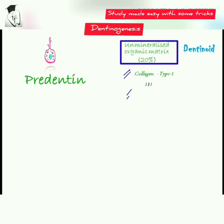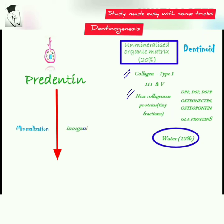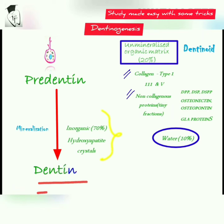Non-collagenous proteins are also present in a tiny fraction, consisting of dentine phosphoprotein, dentine sialoprotein, dentine sialo-phosphoprotein, osteonectin, osteopontin, gla protein, etc. The organic matrix along with water constitutes about 30 percent, and 70 percent of inorganic materials mineralize the pre-dentine into dentine.